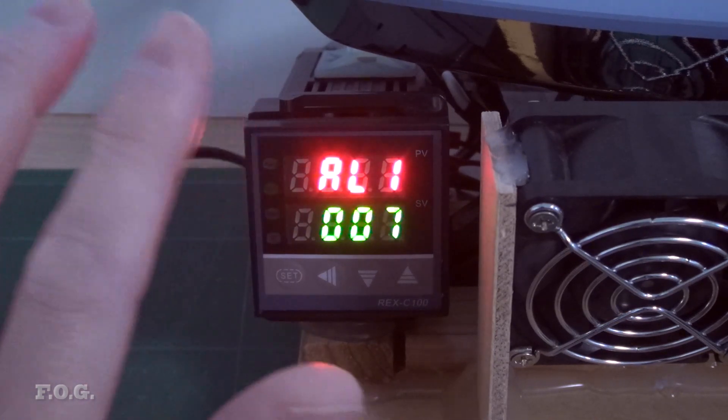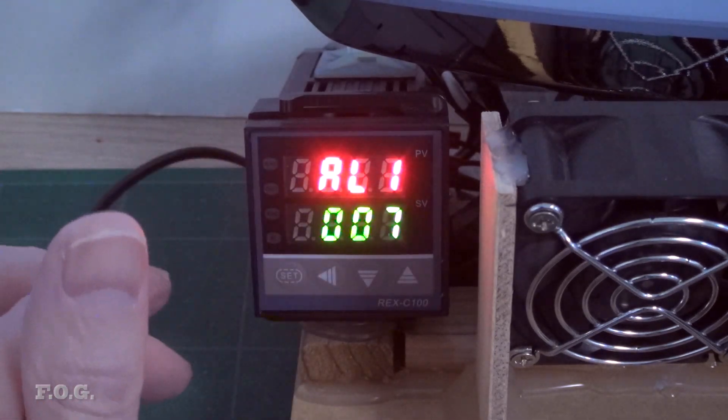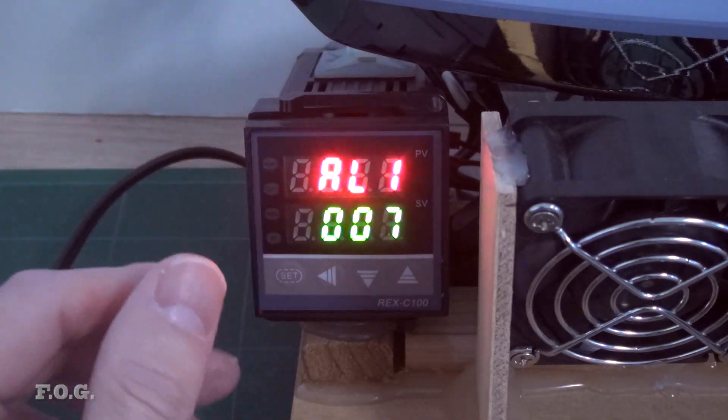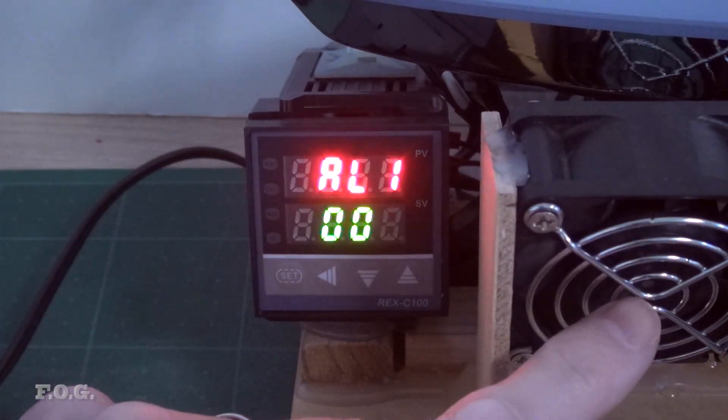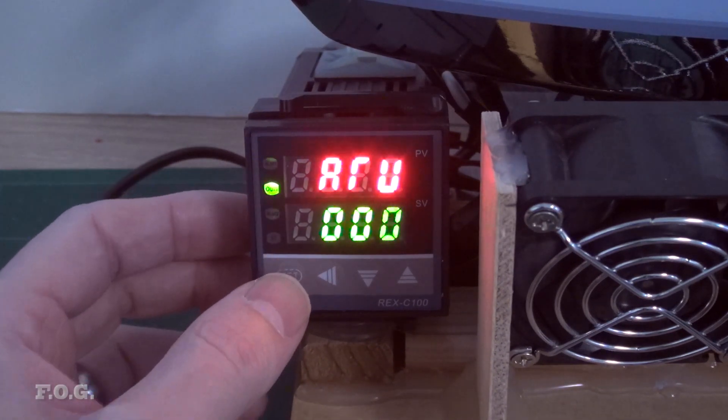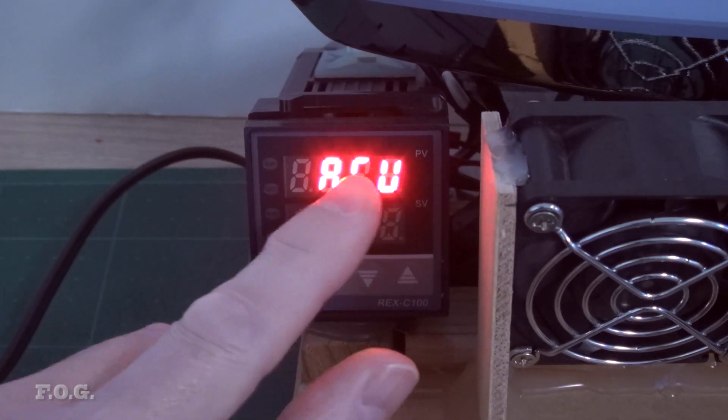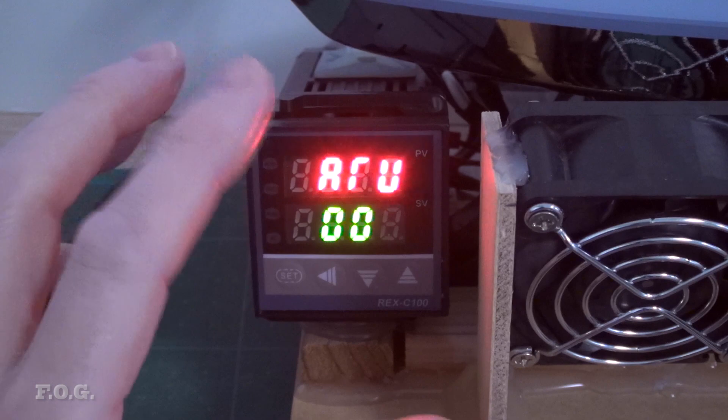So when the measured temperature goes seven degrees above the preset temperature, the alarm relay will be activated and the alarm light will be on. Then it takes, I think it goes down to like about one degree below that and then the alarm goes off or something like that. So that's what I'm using to drive these fans.